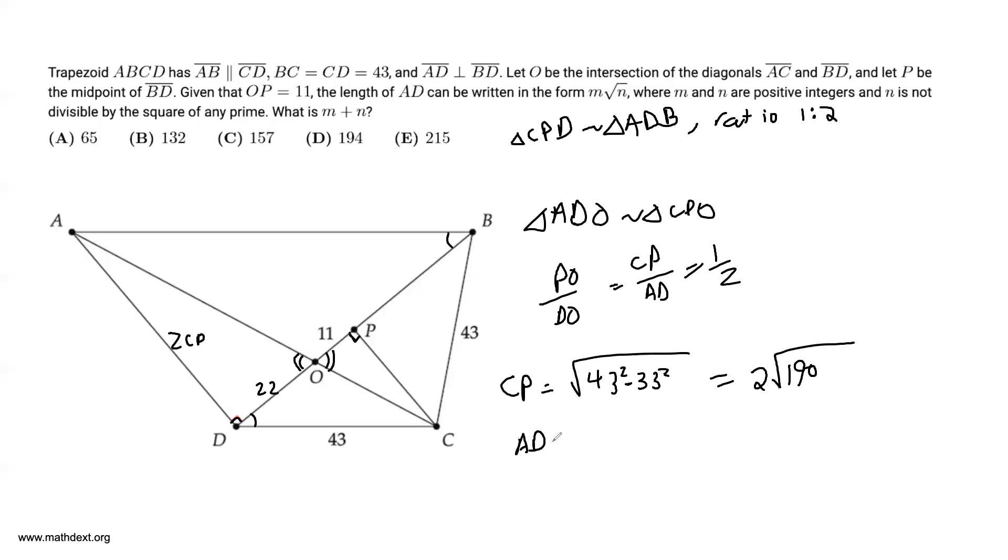But AD is equal to 2 CP, so AD is when you multiply this by 2, you get 4 square root of 190. 190 has no perfect square factor, so we've simplified this all we can. And our final answer is 4 plus 190, which sums up to 194.